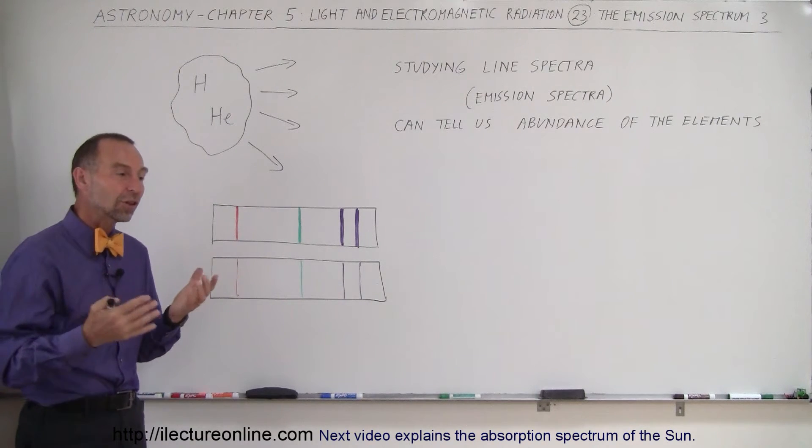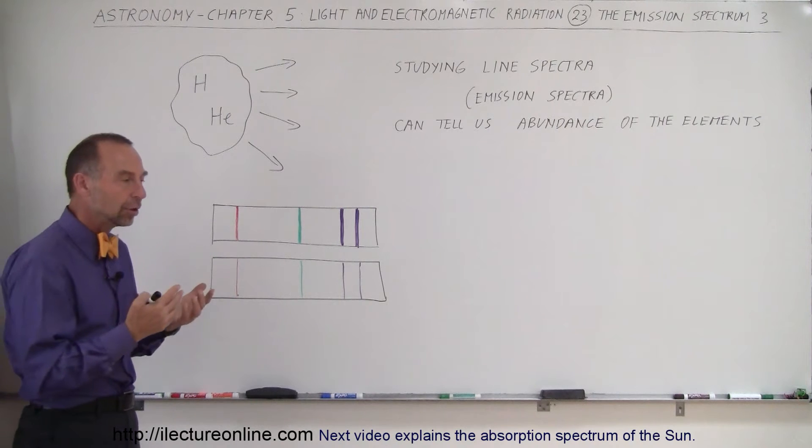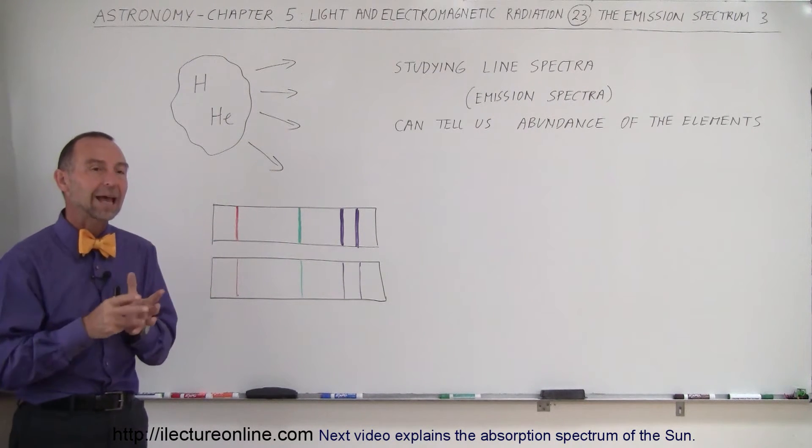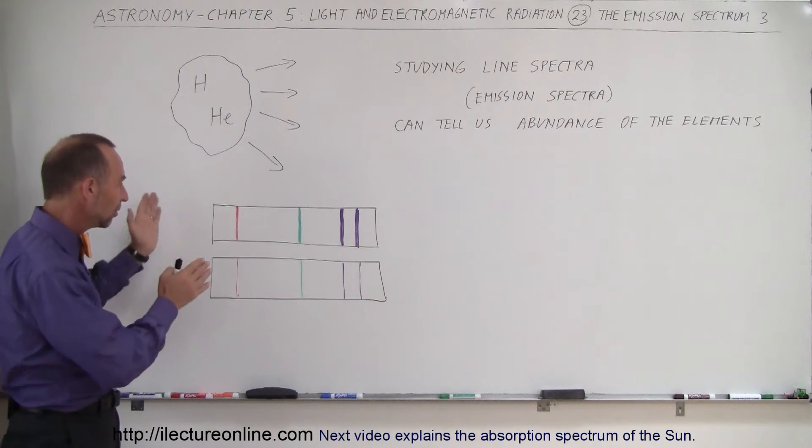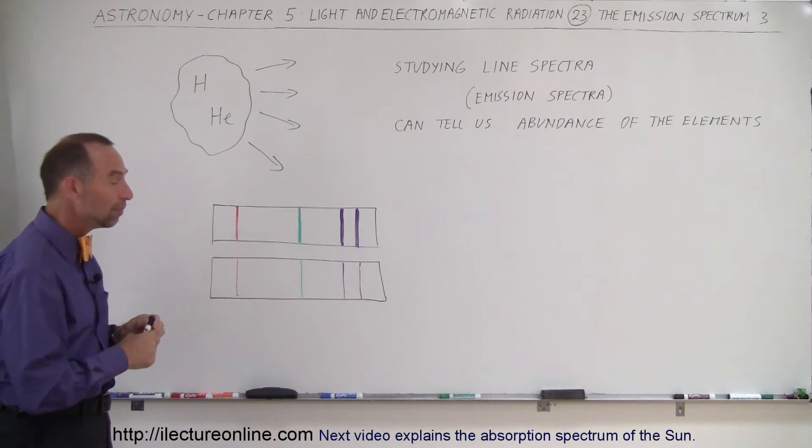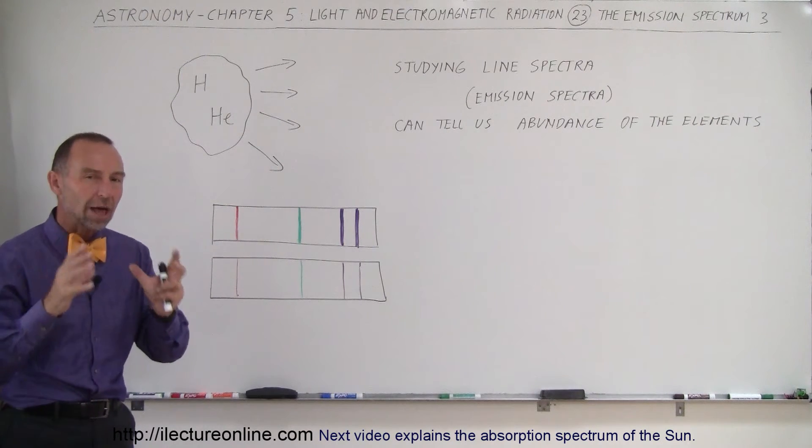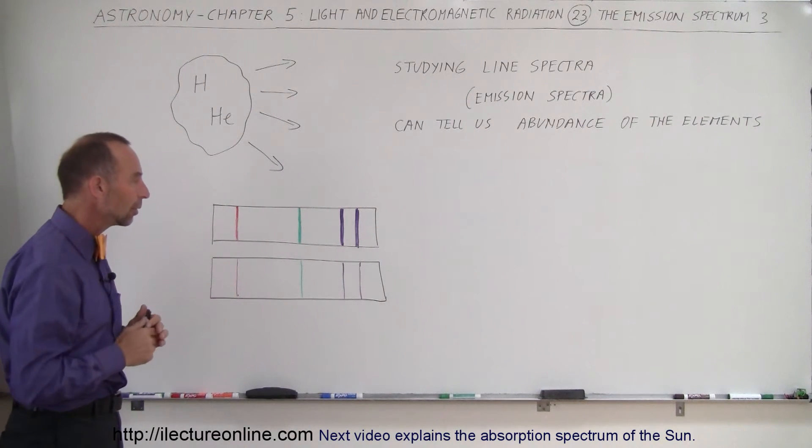In some nebulas, there's a lot more or a lot less hydrogen than typical. There may be oxygen, neon, or all kinds of other gases. When we look at the spectrum, this is the typical spectrum of hydrogen. In some cases, we see very bright lines, which indicates there's a lot of hydrogen in that particular nebula.